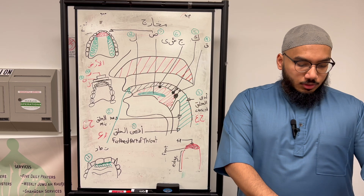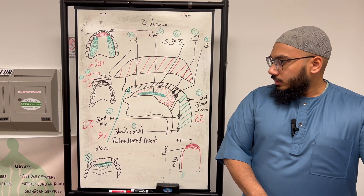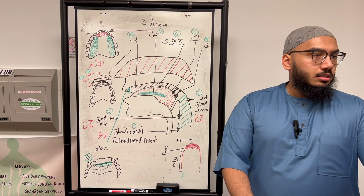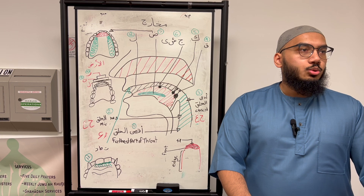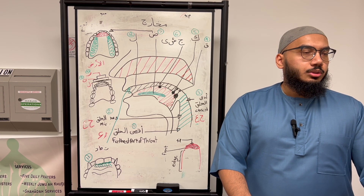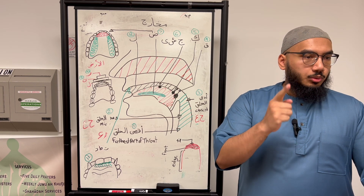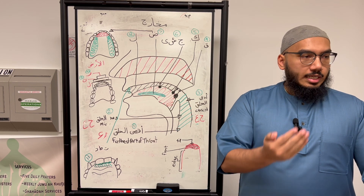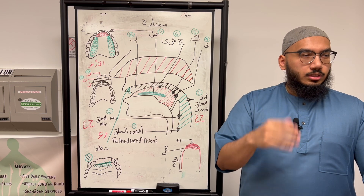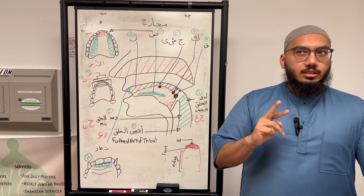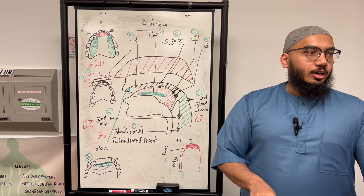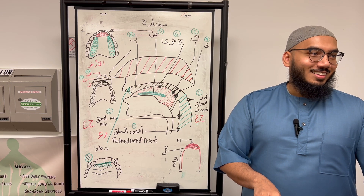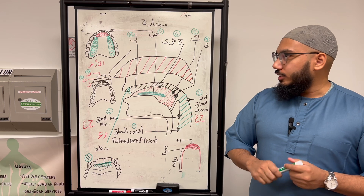Now, some people overemphasize the Ta and say it like an English 'T' — like the word 'two.' When you say 'two' in English, the tip of the tongue is not touching the roots of the teeth; it's actually before that. The Arabic Ta is going to be different — like a 'T' where the tongue does touch the roots. If an Arab is counting, he'll produce that sound differently. English 'T' is different from the Arabic Ta.